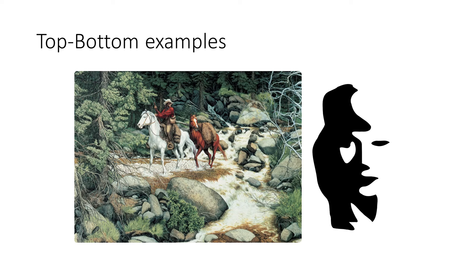In these example pictures, what does bottom-up processing help you identify in each image? Because our brain is trained to identify faces, bottom-up processing quickly identifies the shapes of the faces in the rocks in the left image, and a face in the negative space of the image on the right. Top-down processing allows us to use the context of the image to identify that the faces are in fact just arrangements of rocks and trees in the left image, and a saxophone player in the right image.